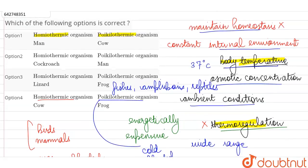So, if we look at our options, they are calling man homeothermic here. So, this is correct. Human beings are warm-blooded but cow, being a mammal, is put under the cold-blooded or the poikilothermic organisms. So, this is not the correct option.